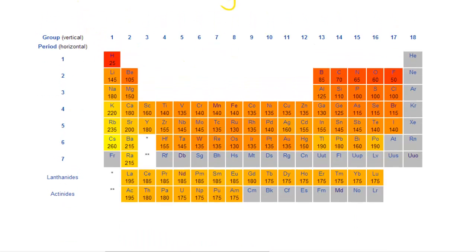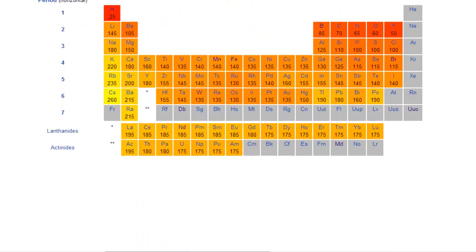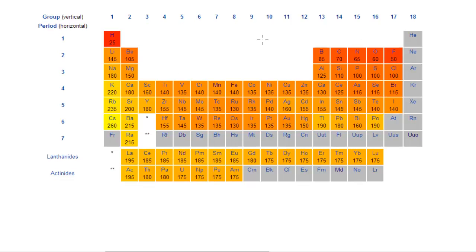Now looking at this particular diagram which I got off Wikipedia, an article relating to atomic radius. What this basically represents is that yellow means we've got a large atomic radius relative to the other ones.